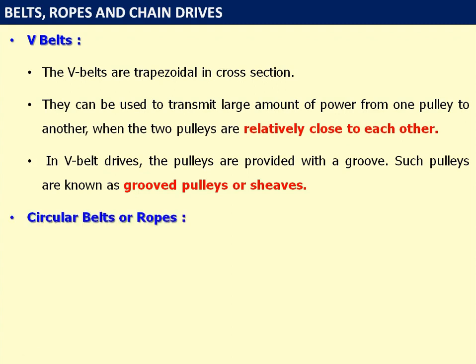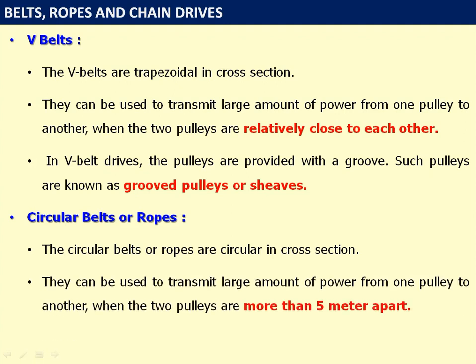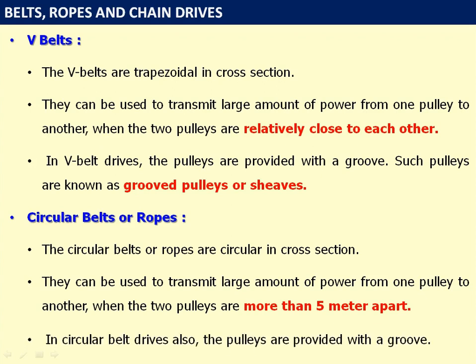Circular belts or ropes are circular in cross-section. They can be used to transmit large amounts of power from one pulley to another when the two pulleys are not more than 5 meters apart. In circular belt drives also, the pulleys are provided with a groove.